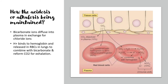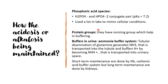The proton binds to hemoglobin forming a proton-hemoglobin moiety, and in the lungs this proton combines with bicarbonate to reform carbon dioxide for exhalation. There are also phosphoric acid species present intracellularly which help in maintaining pH, and protein groups help in buffering due to their ionizing groups. In the kidney there is an ammonia buffer system where tubular deamination of glutamine generates ammonia, which is transported into the tubule to buffer protons, generating ammonium ion that is transported into the urinary space.